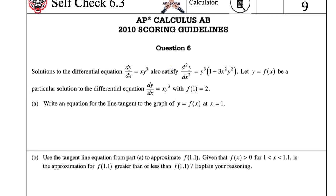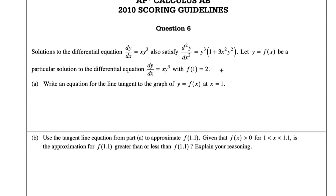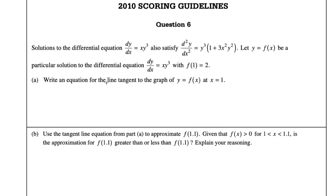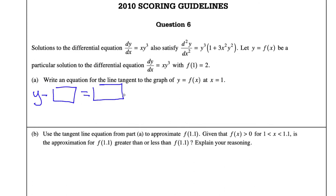Let's do part A. We have all this information and we need to write an equation of the line tangent. Equation of the line tangent — that should spark something in your memory. You should think: y minus something is equal to the slope, or the derivative, times x minus the x-coordinate. So we have our general equation, now we just need to fill in what we have.